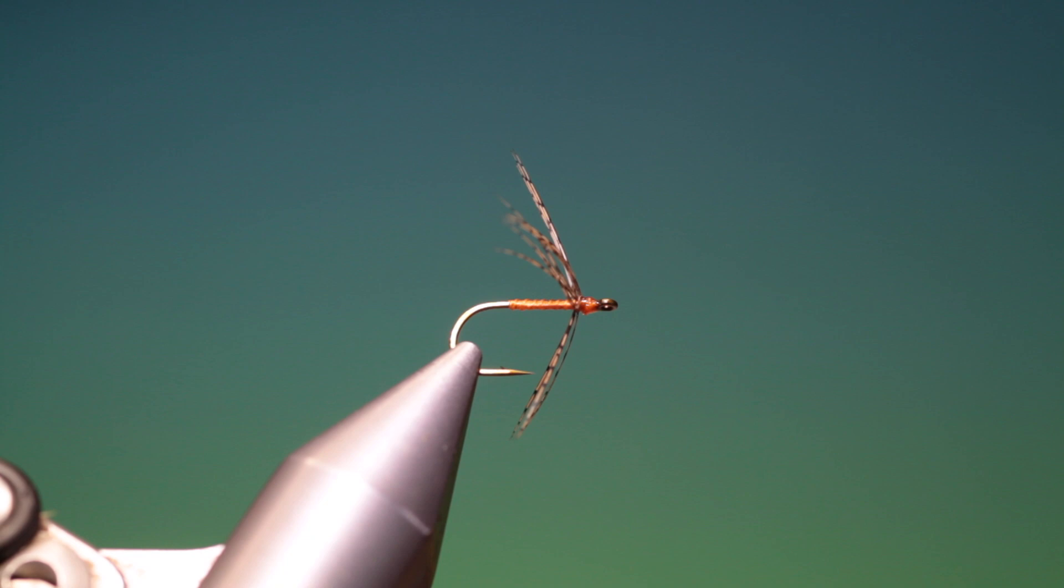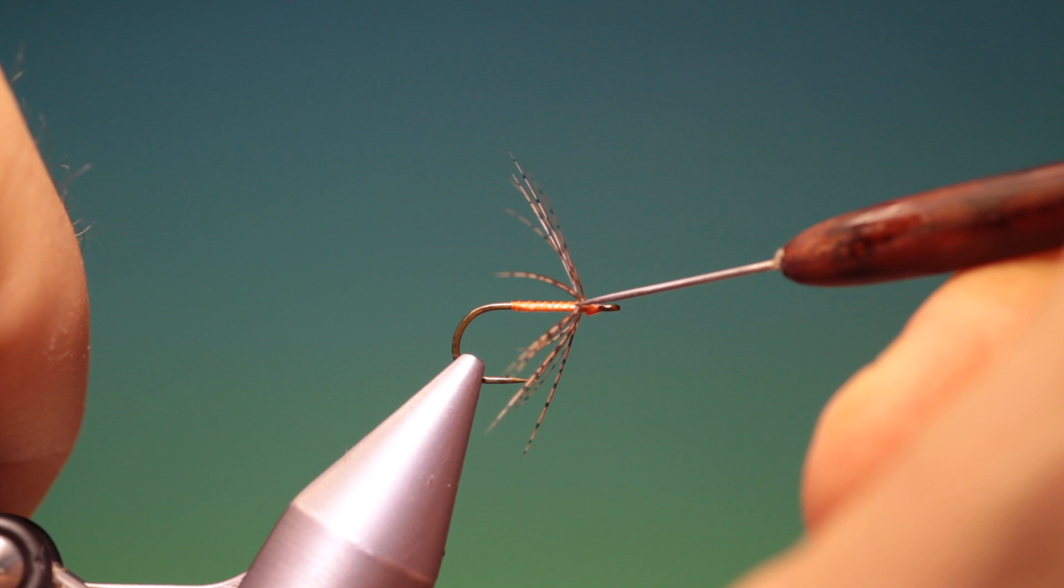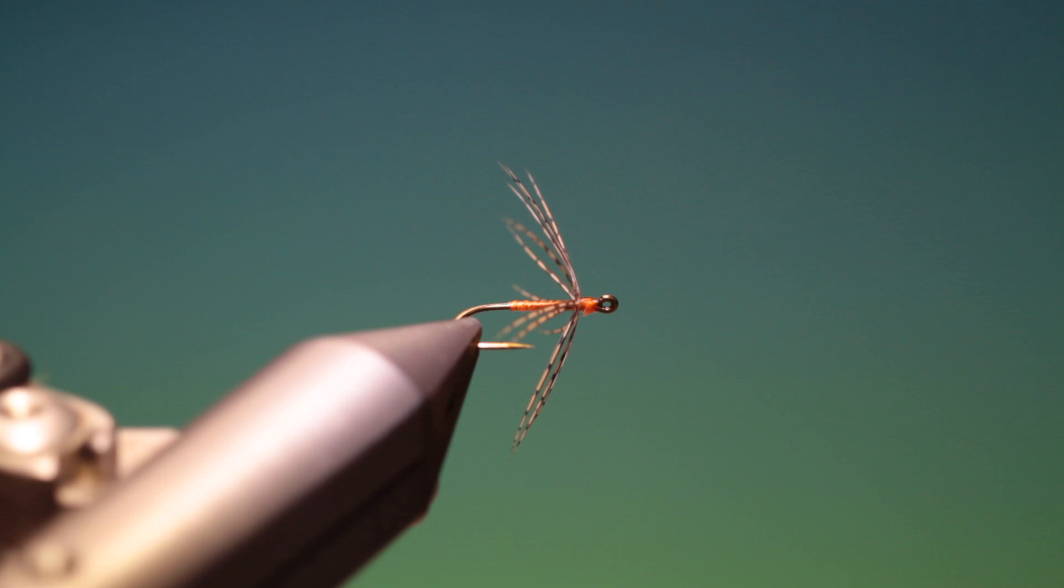And then I'll just split the hackle fibers. And the method of doing it this way, you get a lovely distribution and a perfect curvature to the spider hackle. And that's the finished partridge.